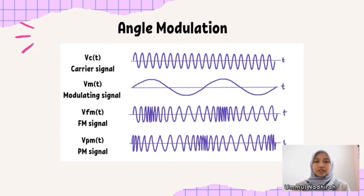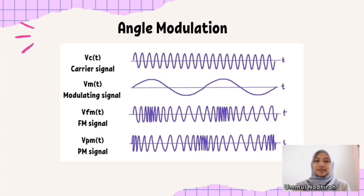These are the resulting graphs of the signals. With an FM signal, the frequency increases at the highest peak of the modulating signal. While in PM, the frequency increases as each oscillation cycle completes.